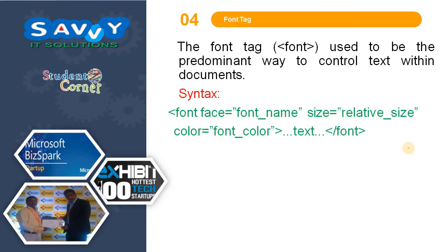The font tag was the predominant way to control text within documents. It uses the attributes: face, size, and color, followed by the text to be displayed — the text will be rendered accordingly. However, this tag has been removed in HTML5.